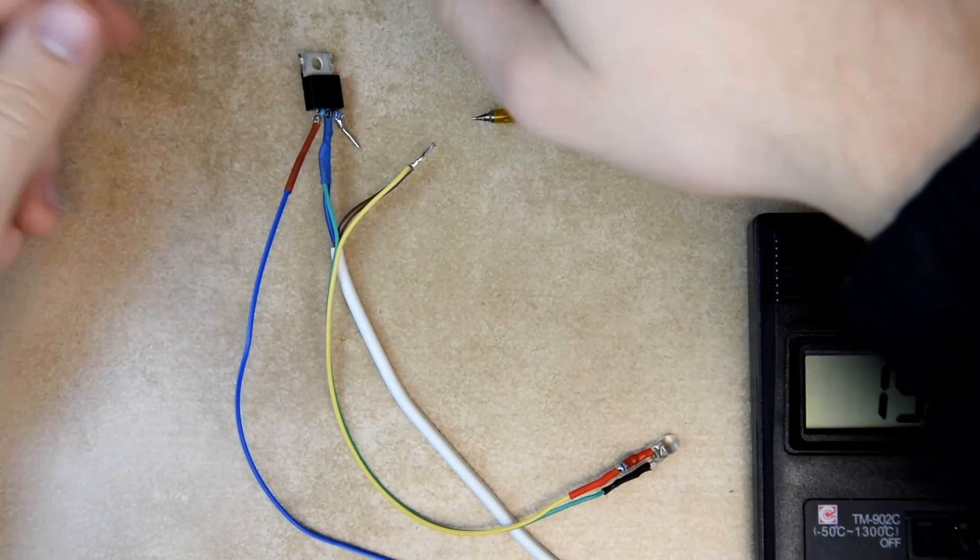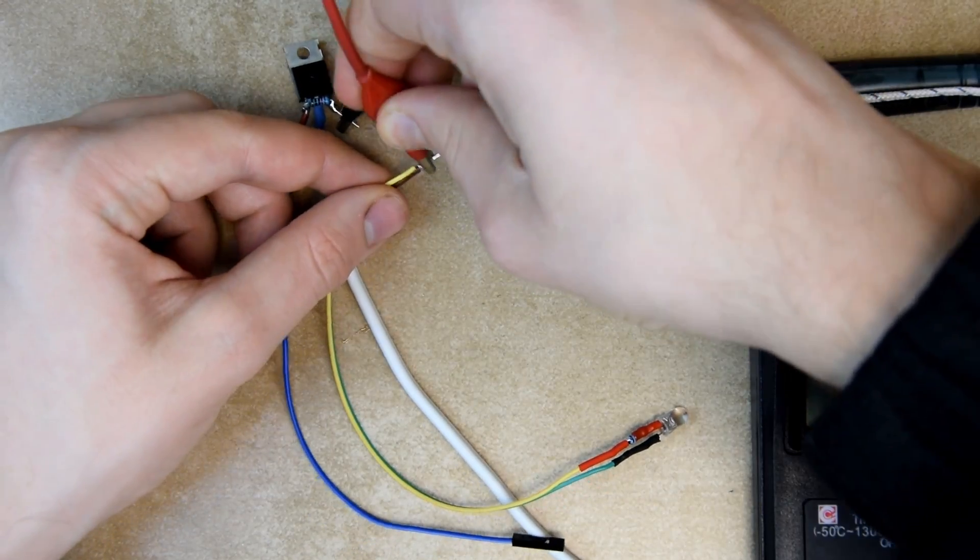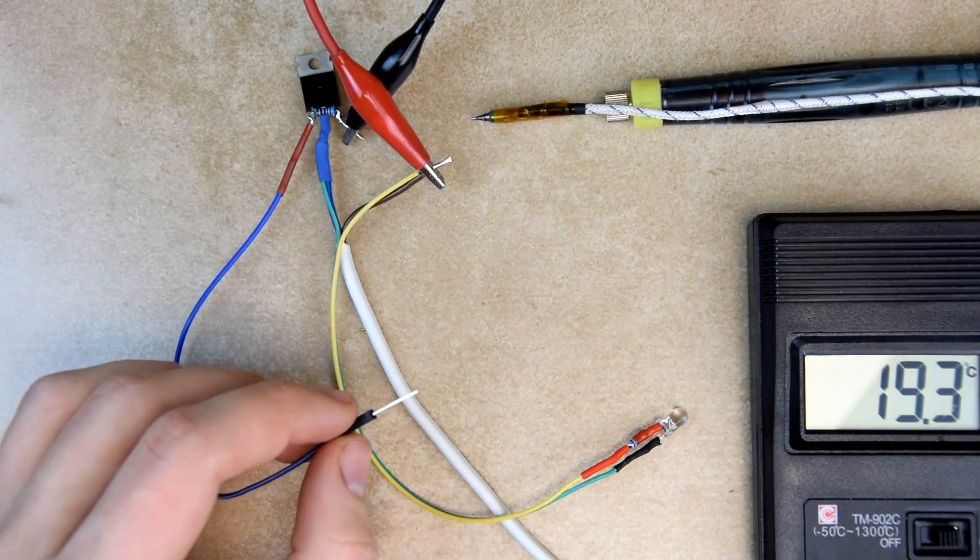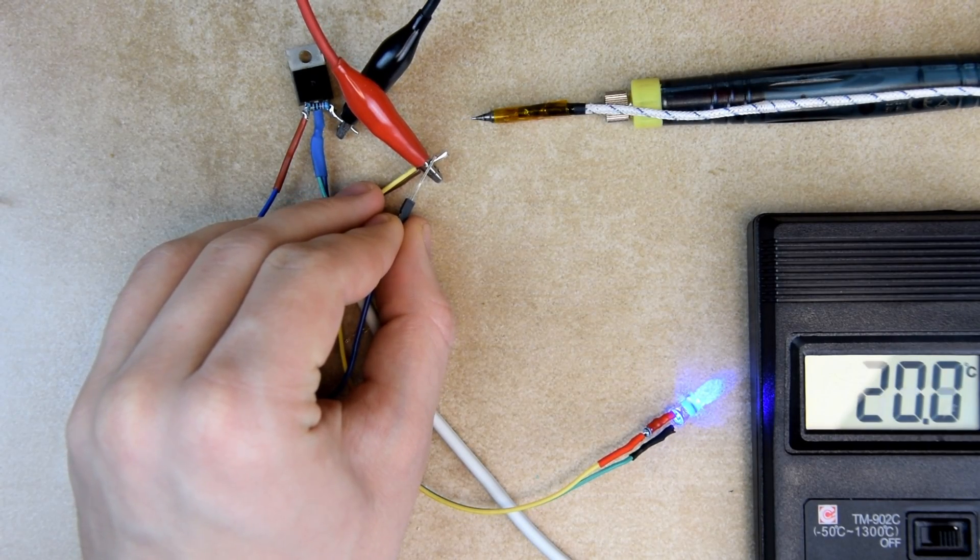After shorting the gate to 5V, the current starts flowing, the LED lights up and the temperature starts rising just as expected.